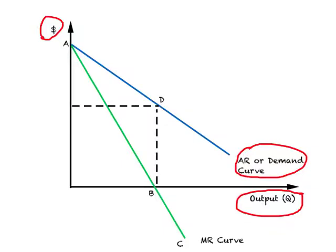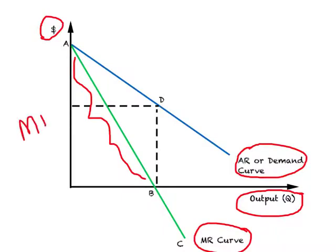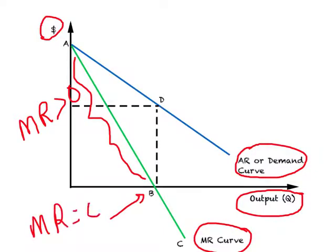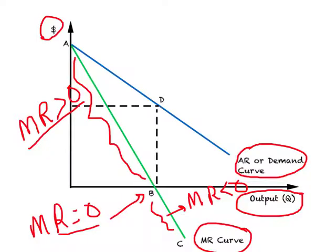The blue line is the average revenue curve, and remember that the average revenue curve is the same thing as the demand curve faced by a firm under imperfect or less than perfect competition. Since AR is declining as the firm produces more output, you see an MR curve placed below the AR curve. MR is positive from point A to point B, at point B marginal revenue equals zero, and then it turns negative.